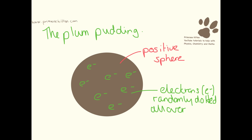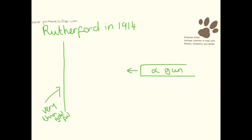But this is not, as we know now, what atoms actually look like. So in 1914, a guy called Rutherford decided to have a look at this and see if he could prove or disprove the theory.